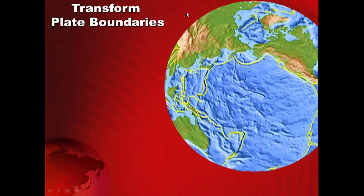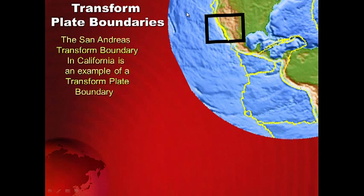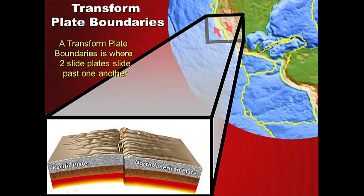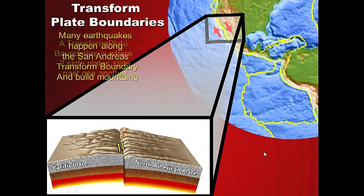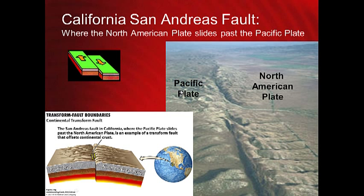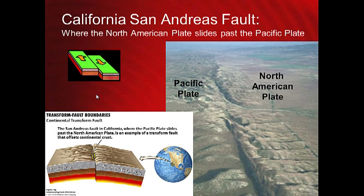The last type today is a transform boundary — and we're bringing it home to California. The San Andreas transform boundary here in California is a perfect example of a transform plate boundary. Here the plates are moving past one another, like sliding two books past one another. We don't get volcanic mountains or deep sea trenches, but we do get a lot of earthquakes and some small mountains. In Southern California, we have the North American plate on one side and the Pacific plate on the other, sliding past one another. That is the California San Andreas transform fault.